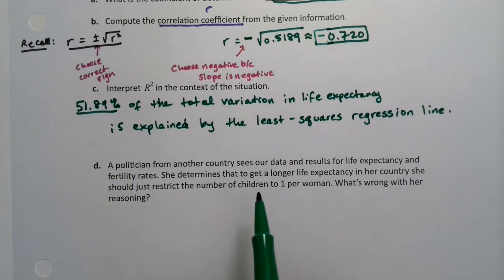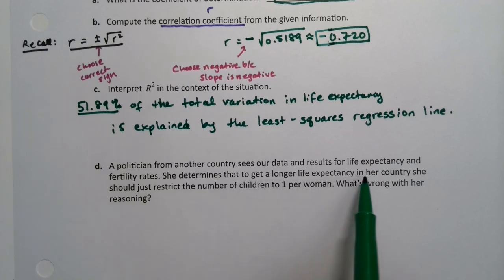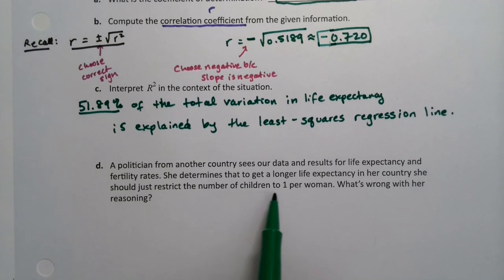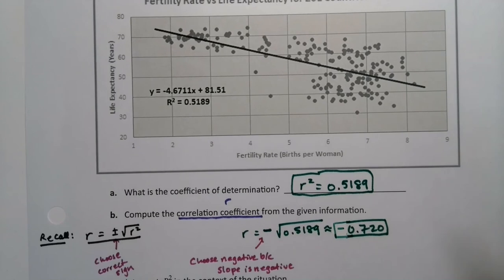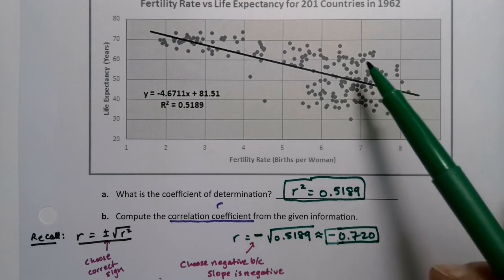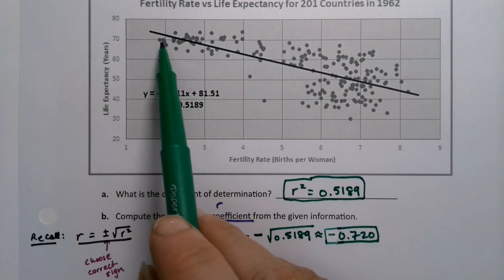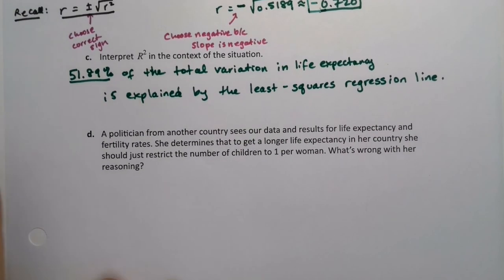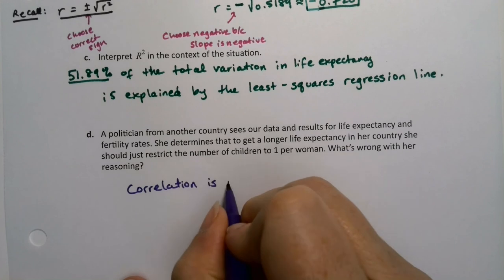Now a politician from another country sees our data and results for life expectancy and fertility rates. So she determines that to get a longer life expectancy in her country, she should just restrict the number of children to one per woman. Because that's never happened before. That's a joke. That has happened before. I'll let you research that. So if you want to move yourself from being a country over here to over here, she just decides, okay that's it, I'm going to make a law that every woman can only have one child and that'll automatically mean that we go over here. Wrong. Correlation is not causation.